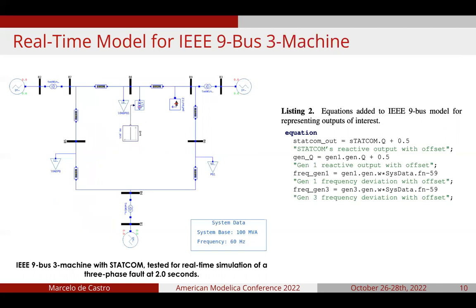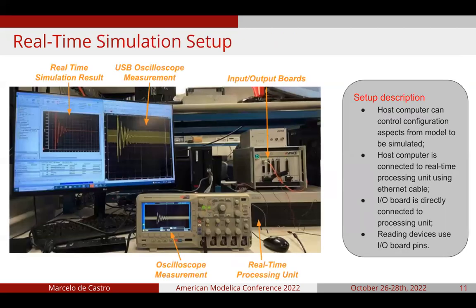The second system to be simulated is the IEEE 9-Bus three-machine system with a STATCOM, and it has 476 DAEs, also simulated for 20 seconds with a three-phase fault applied at two seconds. The outputs are implemented as shown in listing two — the deviation from nominal frequency in both cases is centered at one, while the reactive power outputs from the STATCOM and generators are centered at 0.5 per unit. A host computer controls all configuration aspects needed for the real-time simulation and is connected via Ethernet to the real-time processing unit, which is connected to the input-output boards. Measurement devices such as USB or regular oscilloscopes can be connected to these IO boards for recording simulation measurements.